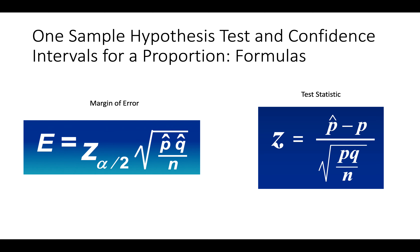For the hypothesis test, we need a step 3 test statistic. That test statistic is also with respect to a normal distribution, a z. It is p-hat minus p — where p is the assumed value of the proportion under the null hypothesis — divided by the square root of p times q divided by n. Notice this is still the standard error of p-hat, but it uses p and q instead of p-hat and q-hat, because we're using the assumed value under the null hypothesis. So it's p and then 1 minus p, which we call q, divided by n.